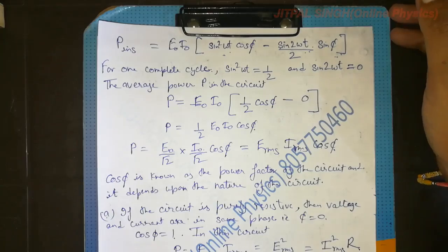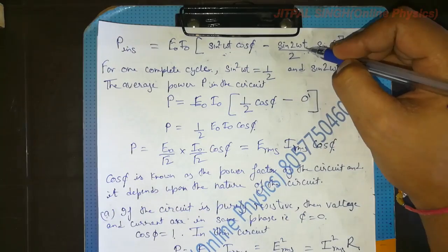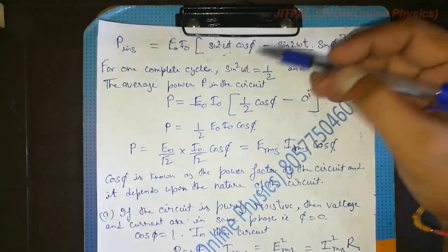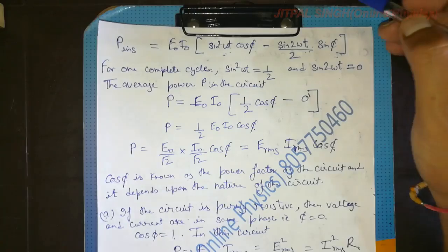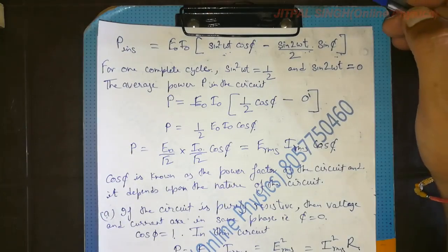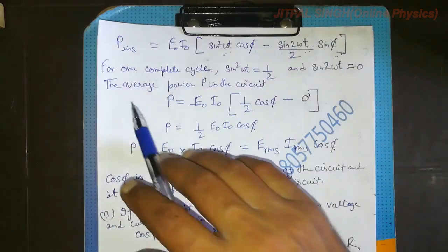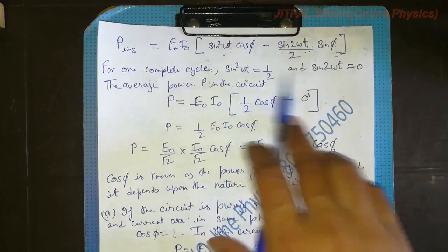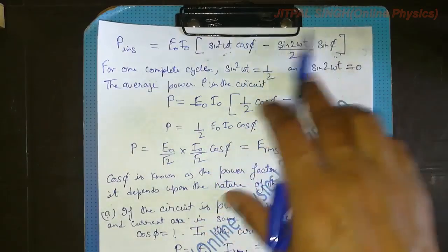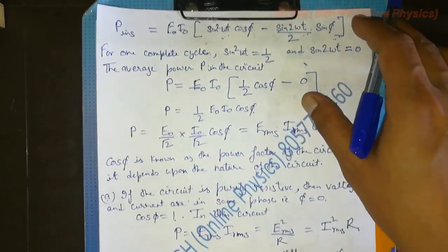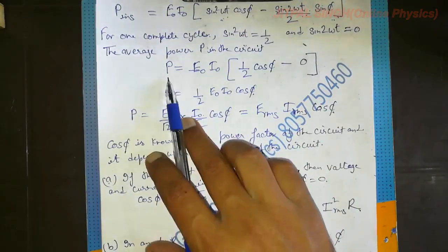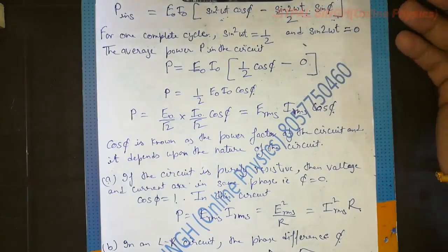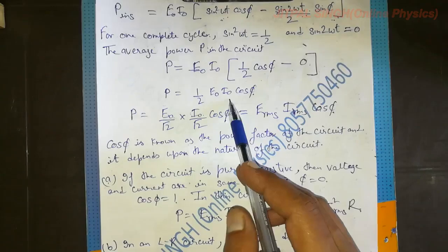We had done this integration in the RMS value of alternating current — please go through that video. For one complete cycle, sin²(ωt) = ½ and sin(2ωt) = 0. Using these values, the second term vanishes and the average power P = ½ E₀I₀ cos φ.